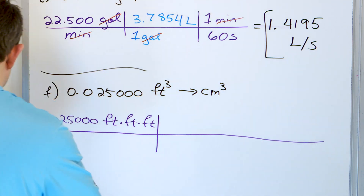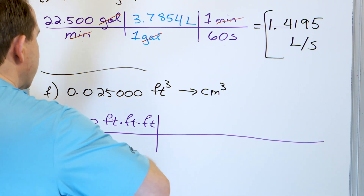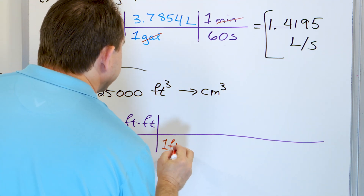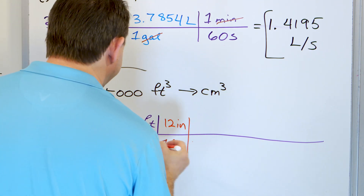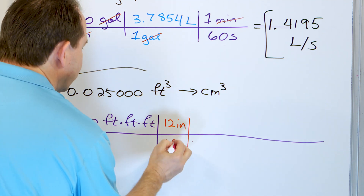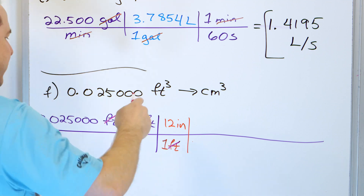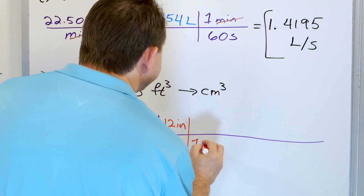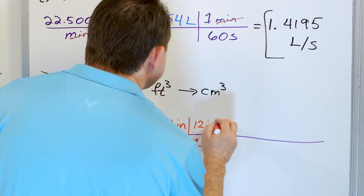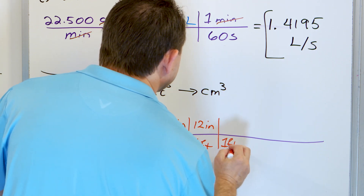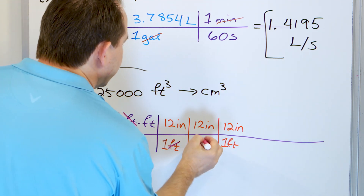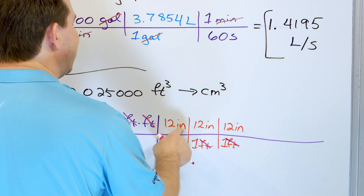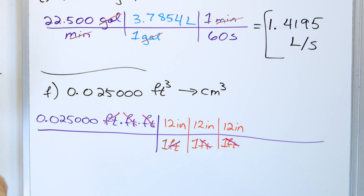I know that in every one foot there are 12 inches. If I stop right there, I've canceled only one of the feet but I have two more left, so I have to do it again: one foot, 12 inches — and again: one foot, 12 inches. This forces you to cancel each foot unit individually. Now I'm left with inches times inches times inches, which is cubic inches if I stop here.